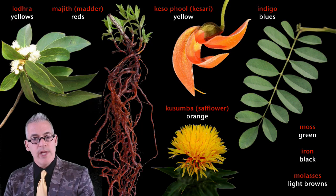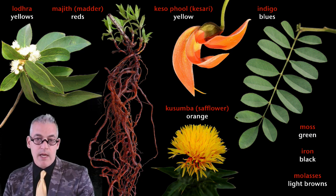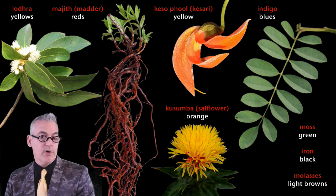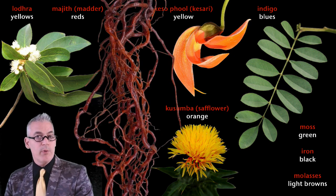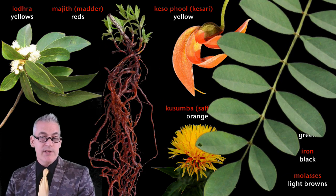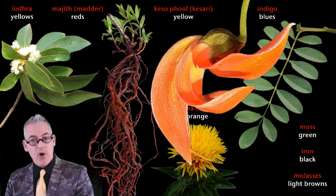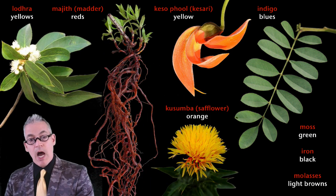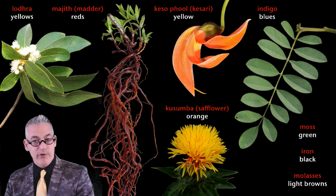The floss colors were created with natural dyes. As with all threads dyed before the advent of synthetic dyes, the range of colors was limited by which natural ingredients were available. Reds were created with madder, blues with indigo, yellows with cassari or saffron or lodra flowers, mosses created different greens, iron could produce black, and molasses was used to infuse floss with different shades of brown.